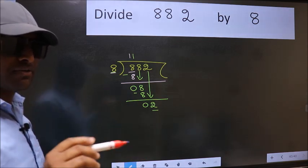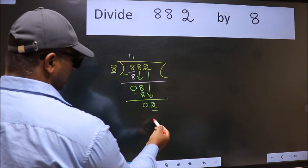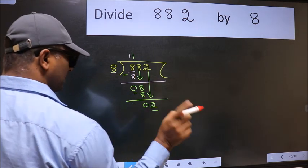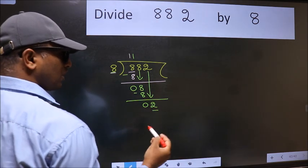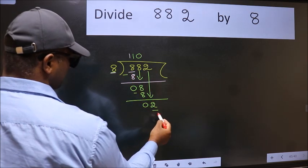Instead of that, what we should think of doing is which number should we take here. If I take 1, we will get 8. But 8 is larger than 2. So, what we do is we take 0. 8 into 0, 0.